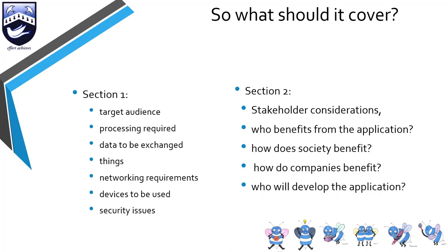How does society benefit? Remember, society is everybody outside the stakeholders. That's a really difficult one — you might be thinking you don't know how anyone benefits from smart lights in a hotel room. But you can talk about things like smart lights turning off after a period of inactivity, saving electricity and protecting the environment. You could talk about a wider group of people being able to access rooms — if you have a disability, you can get in with your voice and voice-activate the lights. You're talking about a bigger benefit than simply making money.